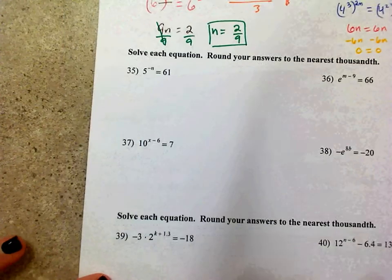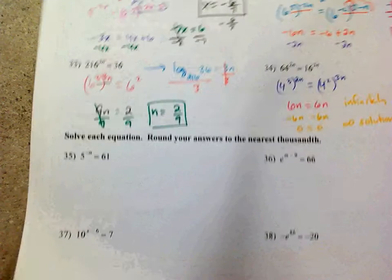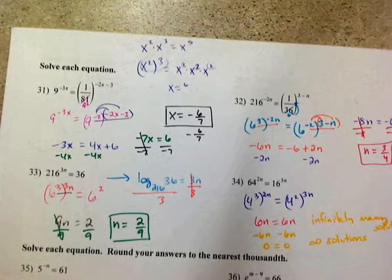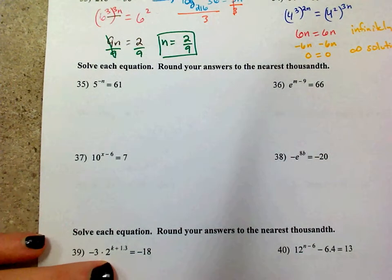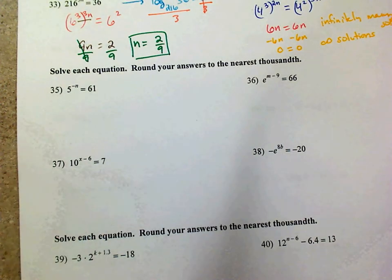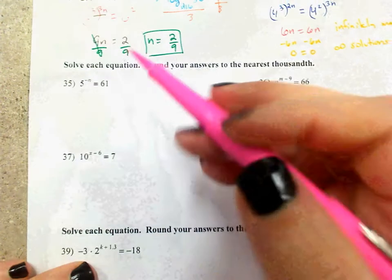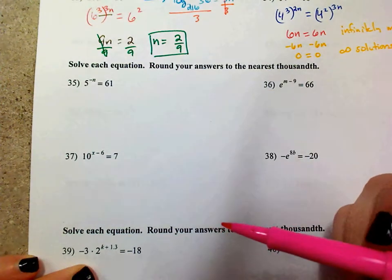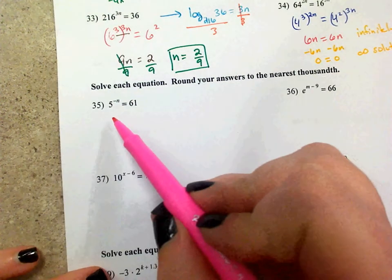When you get to problems like this without a calculator, I'm not going to ask you to give the answer to the nearest thousandth. I expect you to still solve the problem, which means you need to be able to leave it in a certain expression. You could attempt to rewrite both sides as the same base, but you cannot rewrite 61 as a power of 5 — so you have no choice but to use logs.